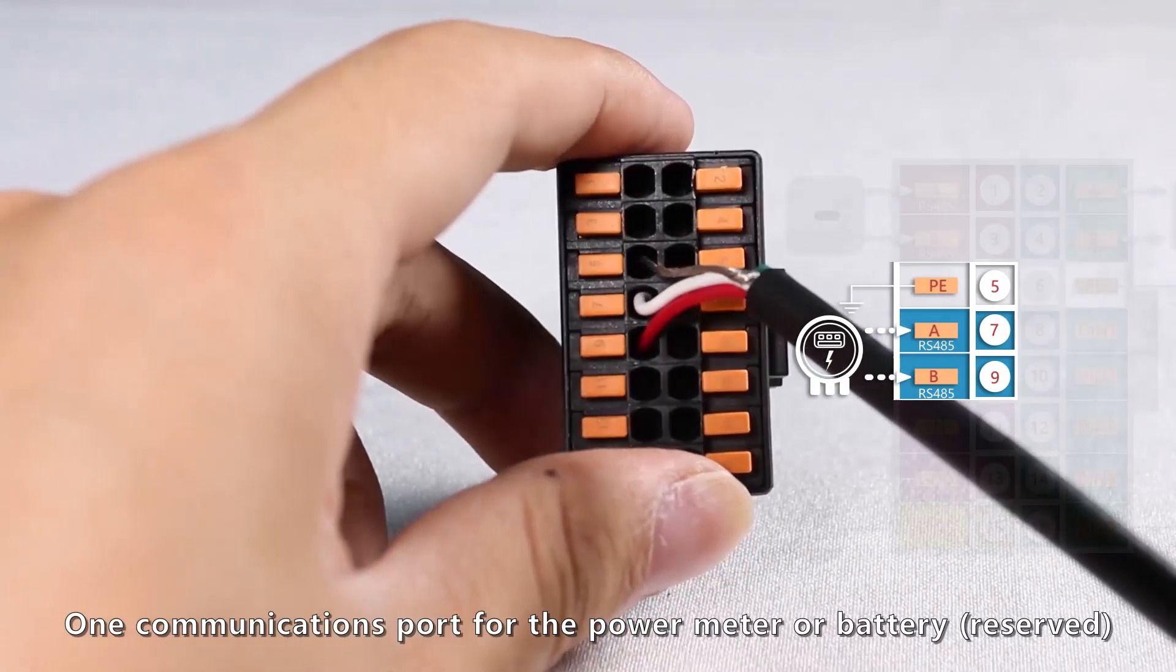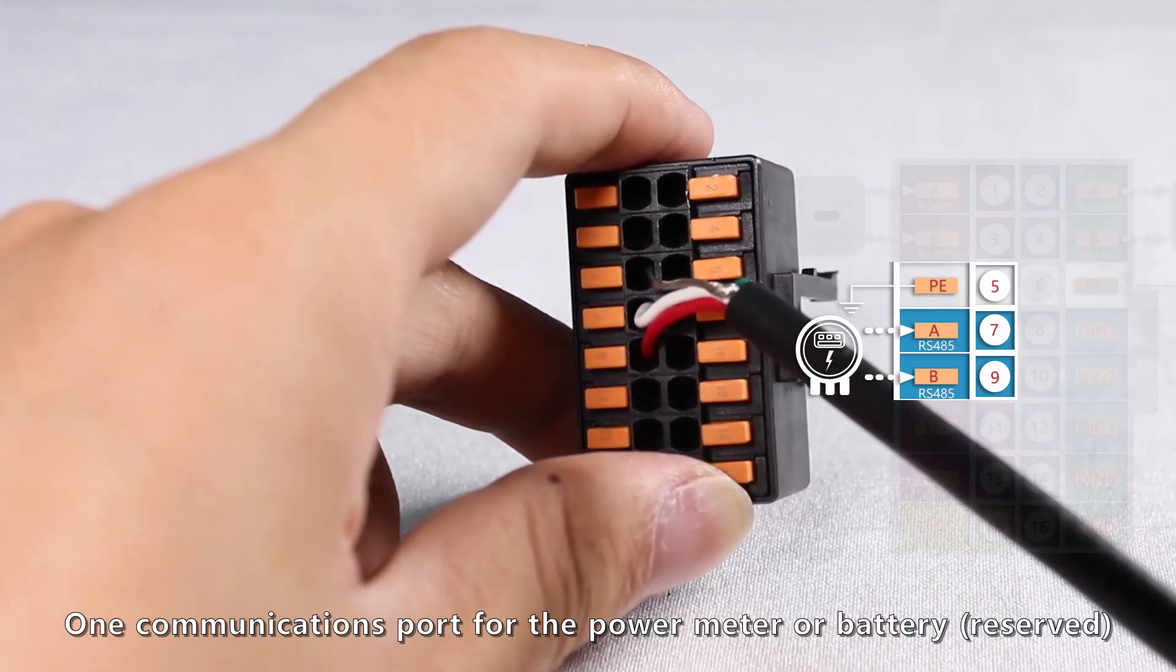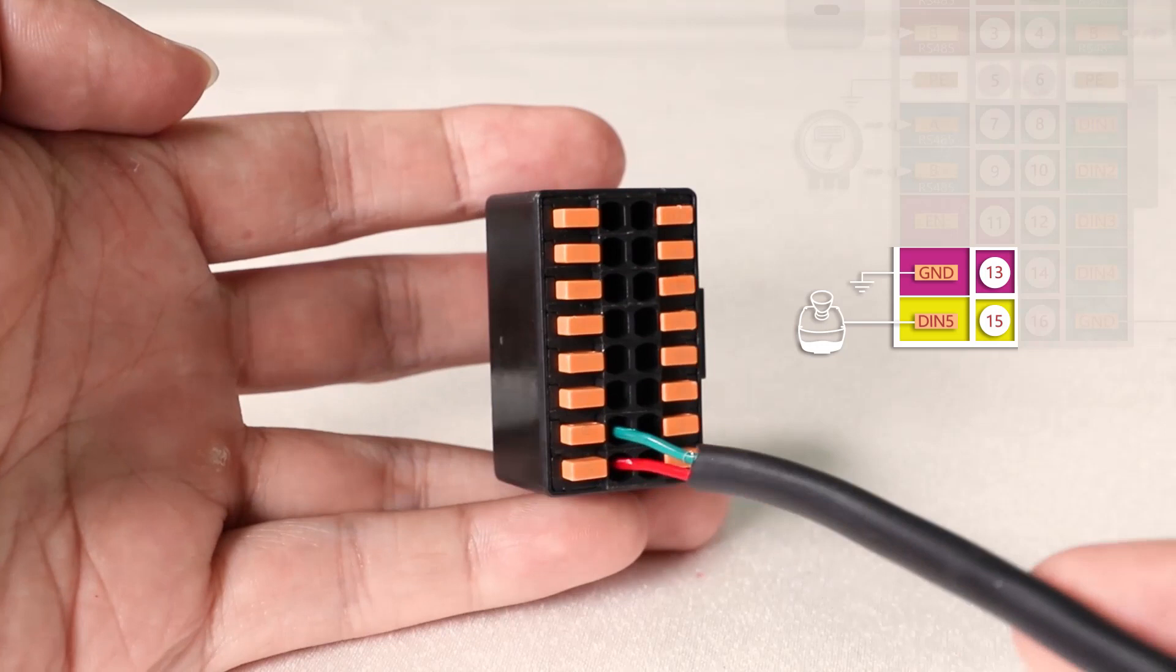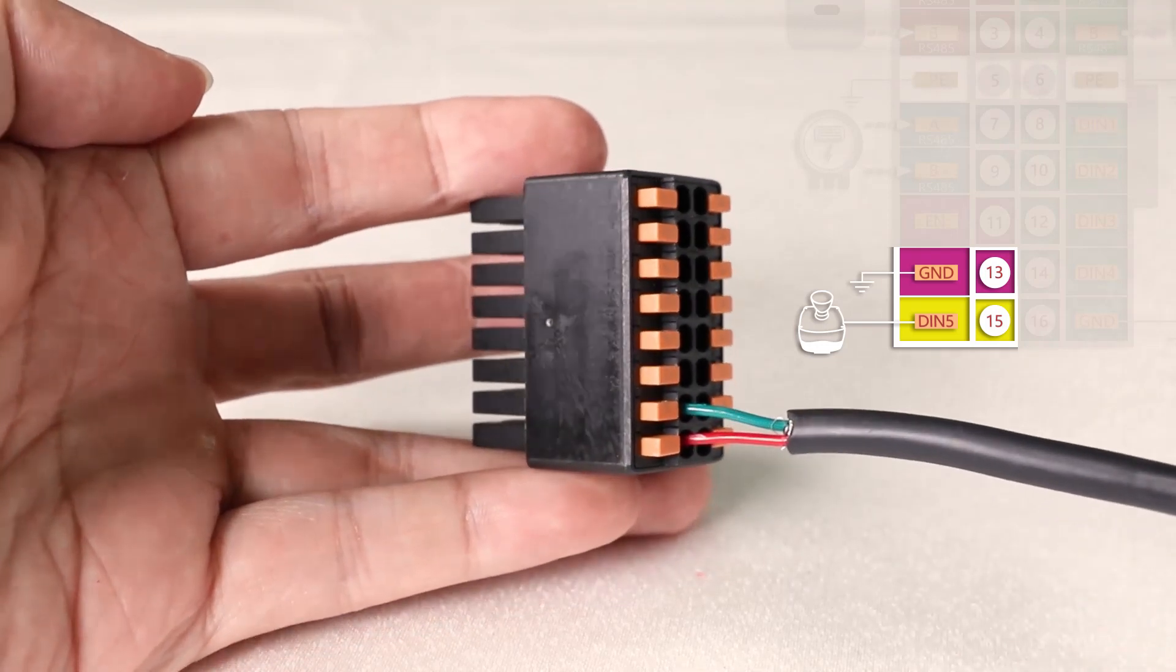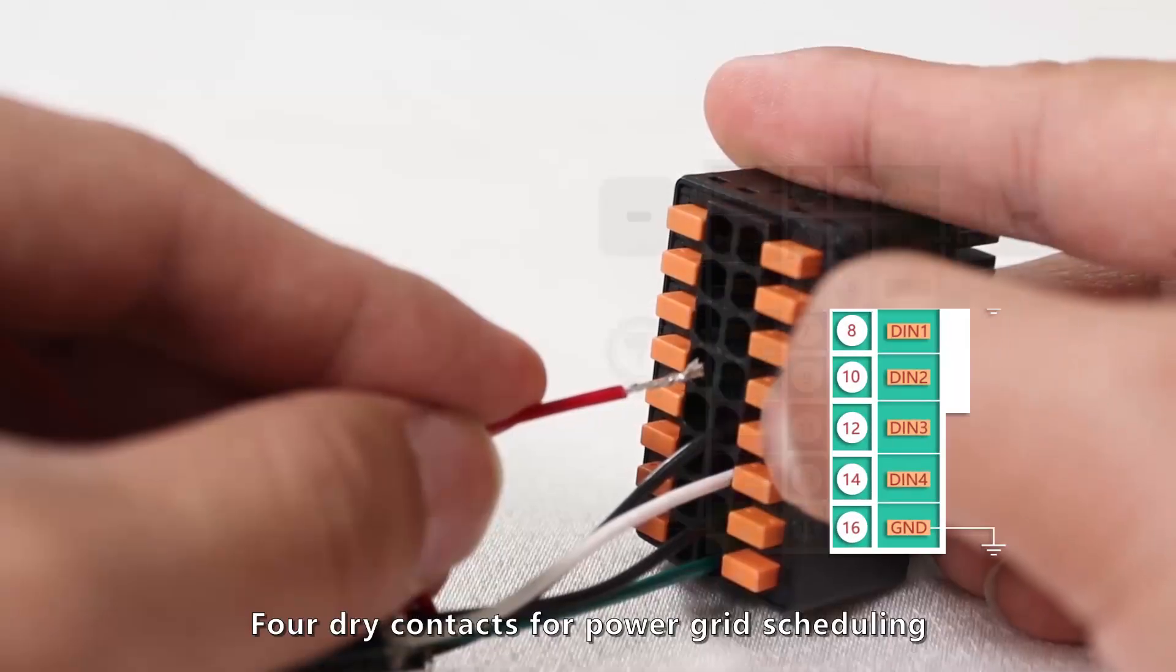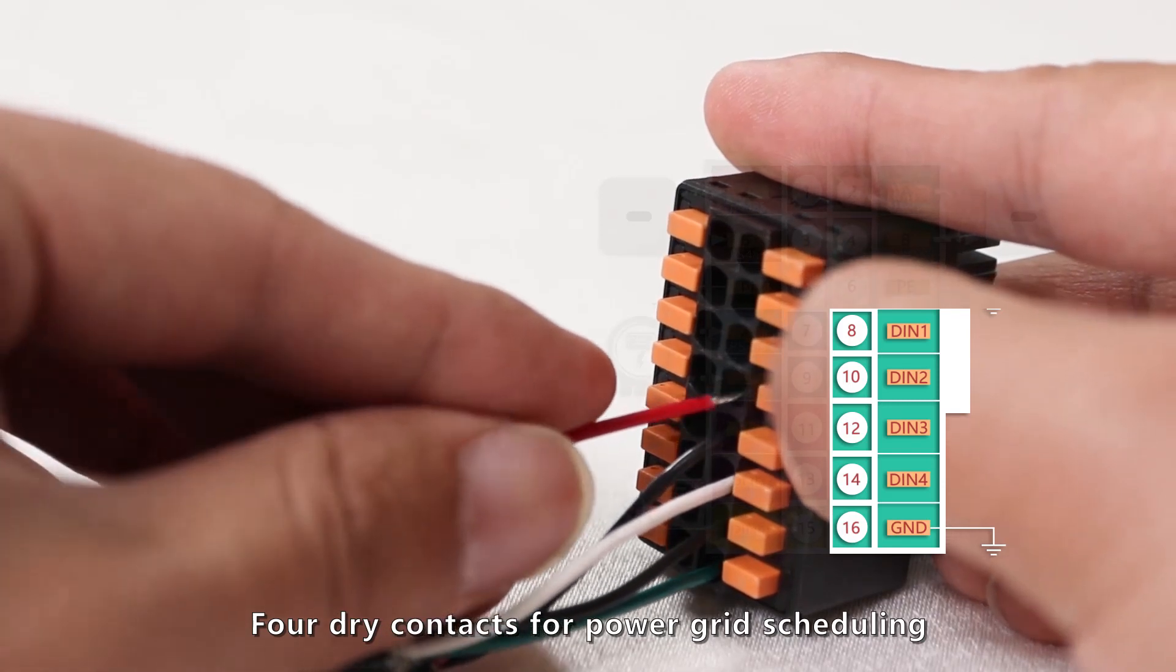One communications port for the power meter or battery. Four dry contacts for power grid scheduling.